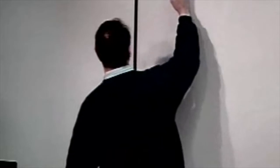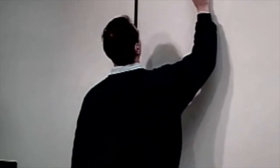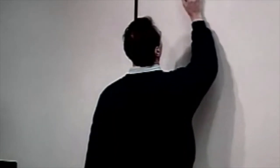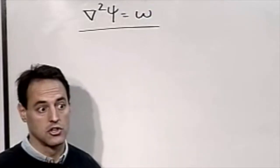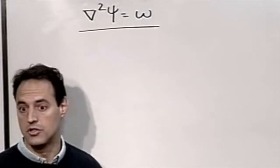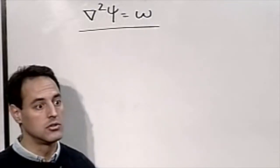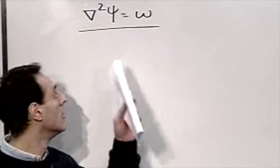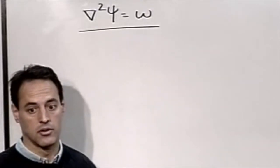We are moving on to a different technique for solving equations. We keep emphasizing in lectures that the bottleneck for homework 2 is the advection-diffusion equations, where the stream function is coupled to vorticity through the Poisson equation.